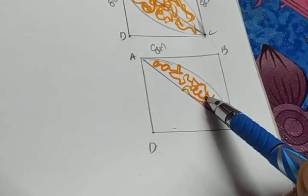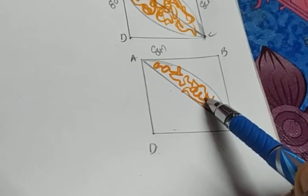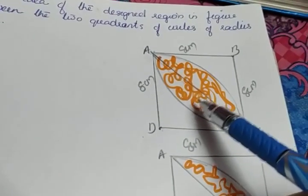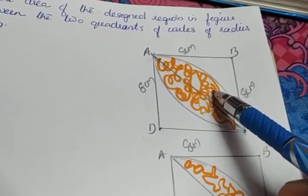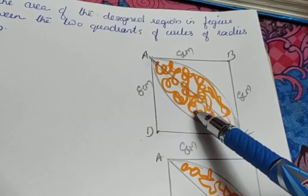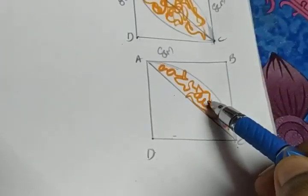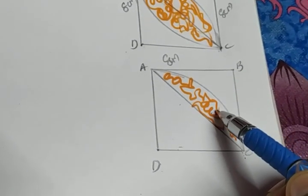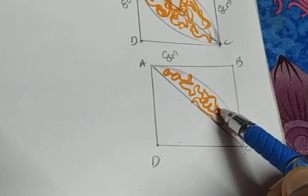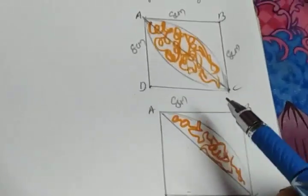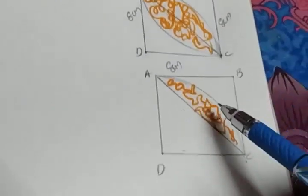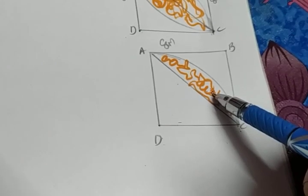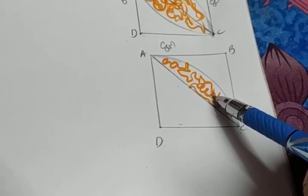To find the area of the segment, the formula is: area of sector minus area of triangle. This area will be the same for the lower section of the designed portion also. To find the area of the full designed portion, we find the area of this segment and multiply it by two.